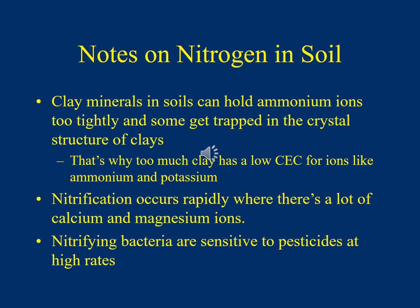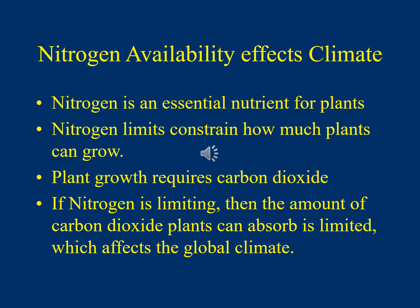Nitrifying bacteria are sensitive to pesticides at high rates — pesticides disrupt and change the populations of bacteria important for converting nitrogen into a form plants can absorb. Nitrogen availability is also linked to plant growth and the carbon cycle: plants getting more nitrogen grow faster and absorb more CO2 from the atmosphere. If nitrogen is limiting, the amount of CO2 plants can absorb is limited, affecting climate at scale. The nitrogen and carbon cycles are intertwined and both need consideration for overall biosphere health.